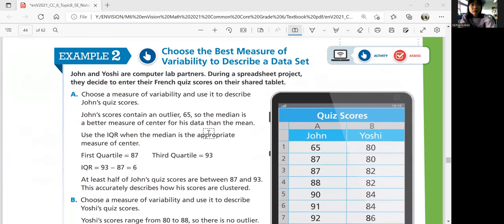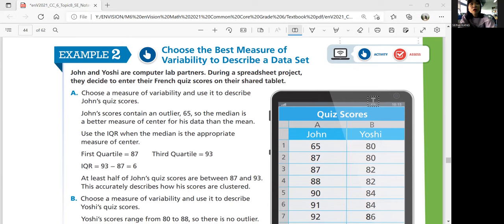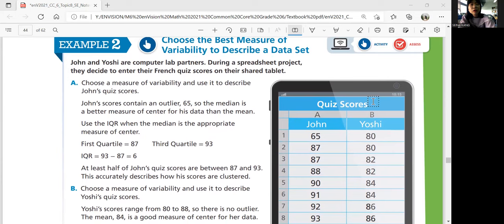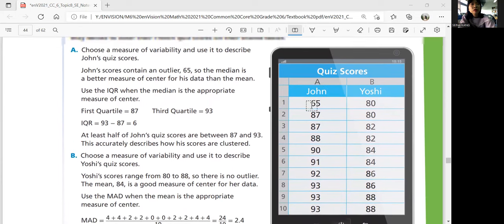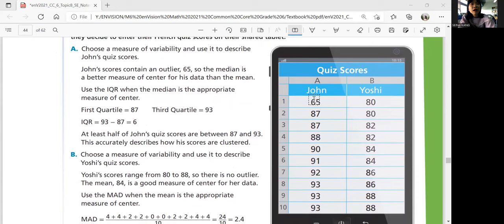Next page. Example two. Choose the best measure of variability to describe a dataset. John and Yoshi are computer lab partners. During a spreadsheet project, they decide to enter their French quiz scores on their shaded tablet. So part A. Choose a measure of variability and use it to describe John's quiz scores. So John has all these data. So his scores contain an outlier 65, but most of his data is pretty good, right? So the median is a better measure because the outlier will affect his mean. So you're going to use the IQR because IQR is dealing with the median. What is the measure of variability that deals with the mean? It's the MAD, mean absolute deviation.